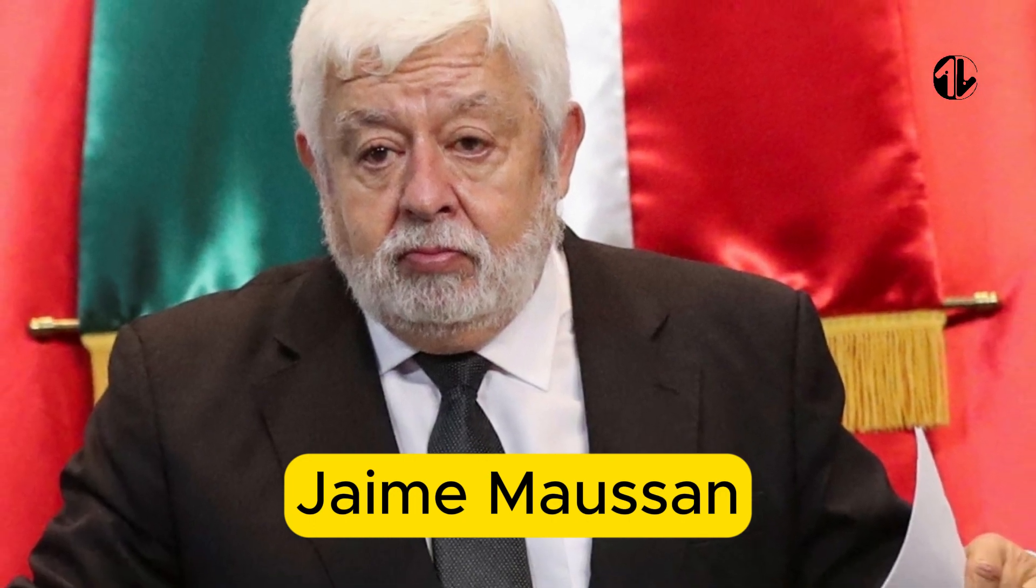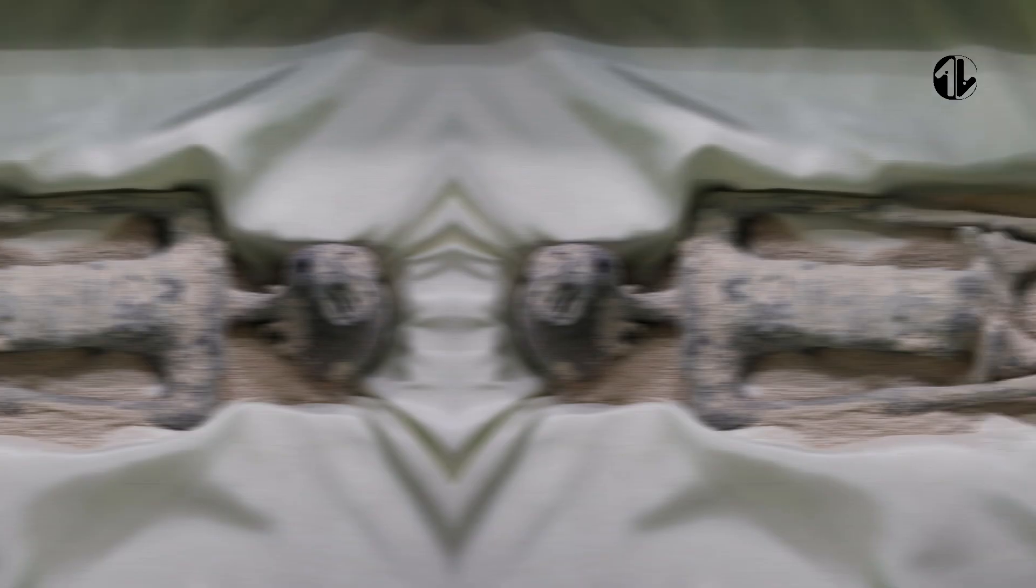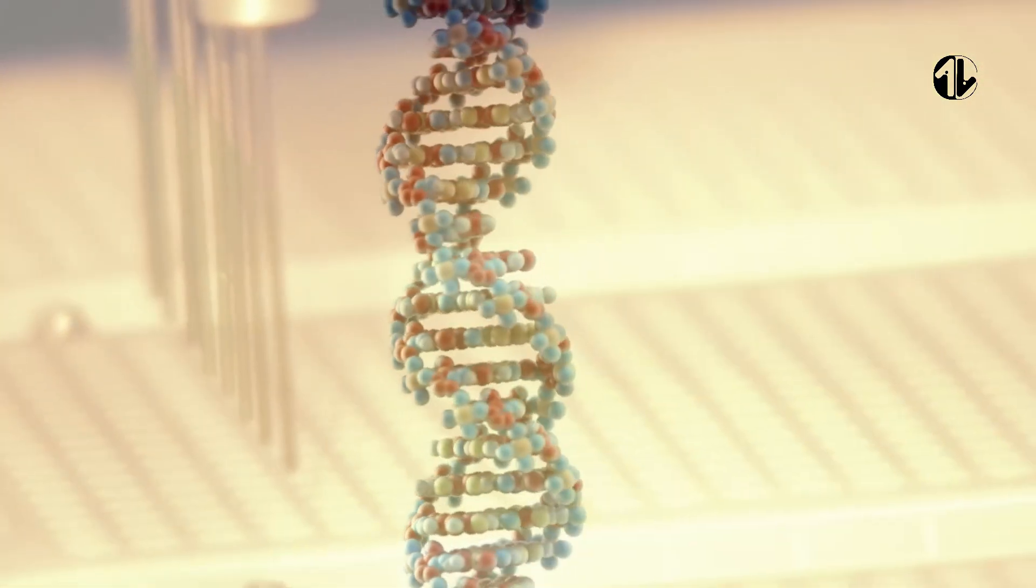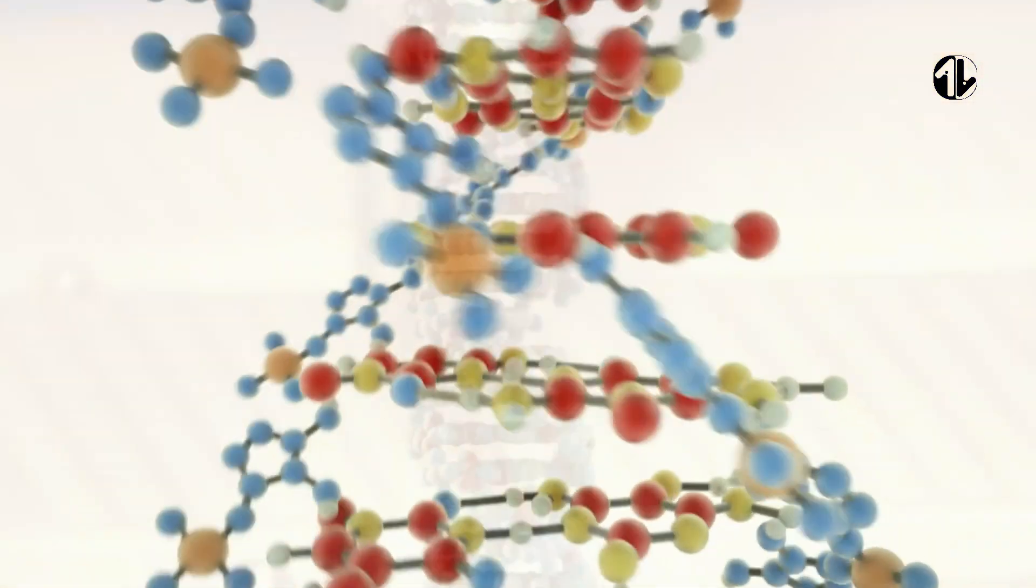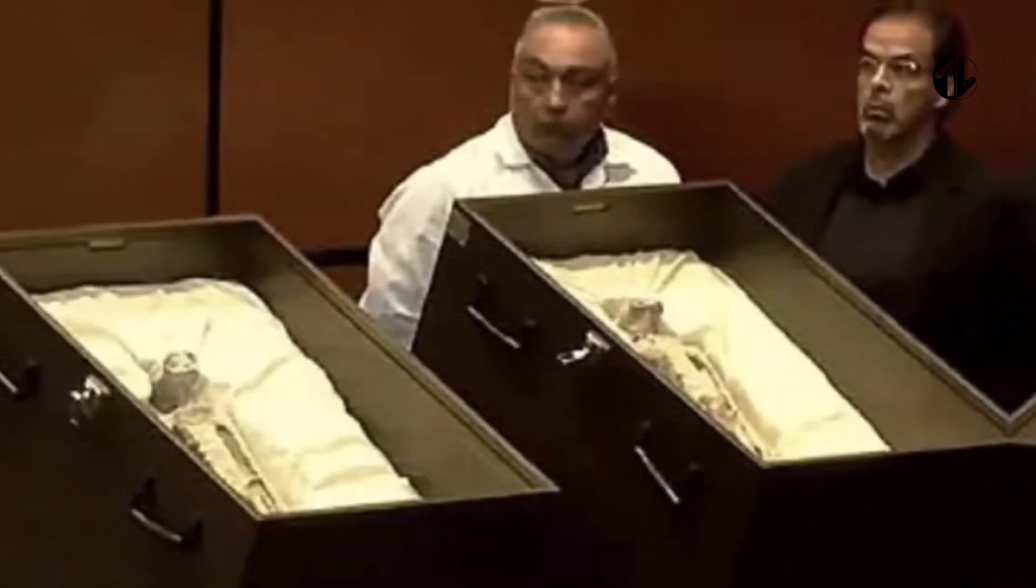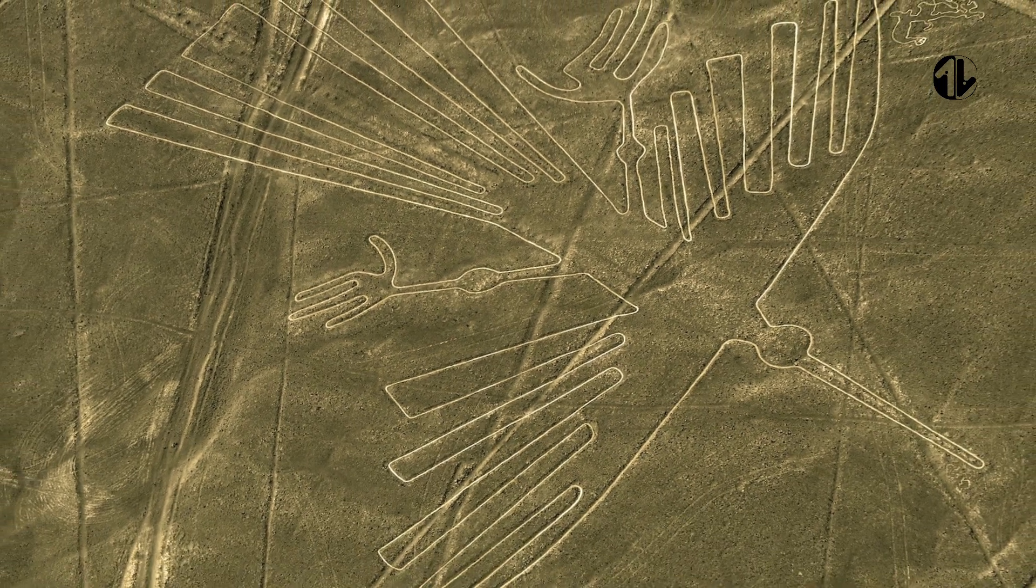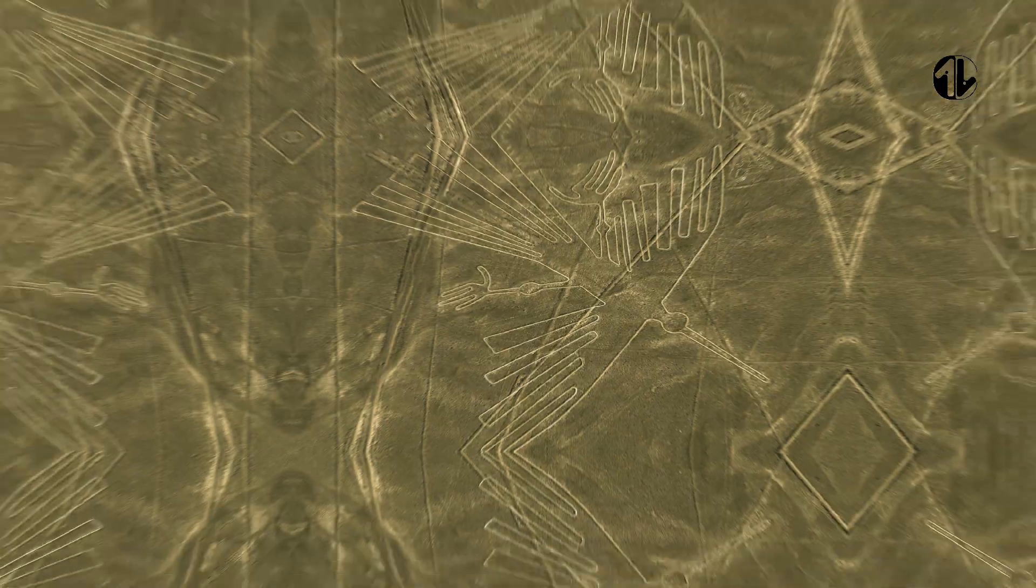Maussan stated that these specimens are unrelated to any life on Earth. The two tiny skeletal remains were displayed in a box, each with three fingers on each hand and elongated heads. Notably, they were found in 2017 in Peru near the ancient Nazca lines.